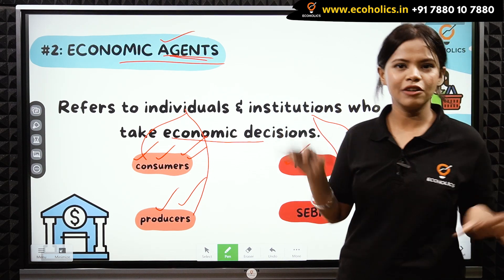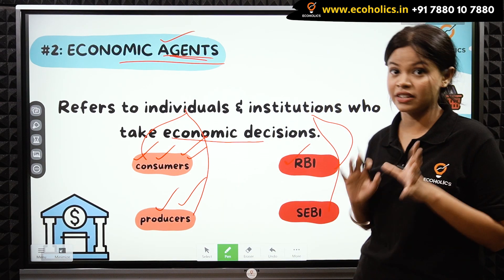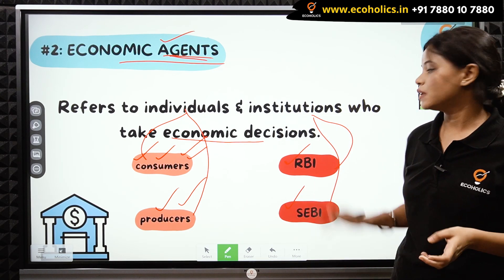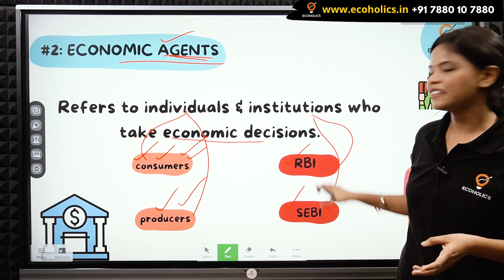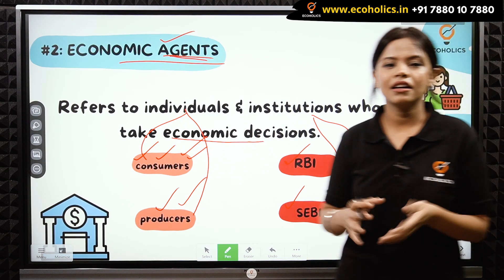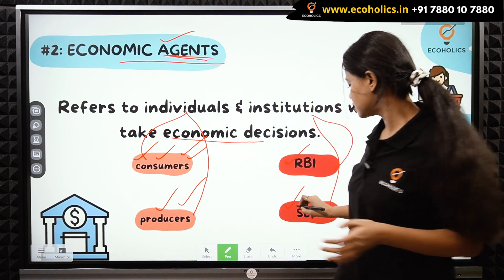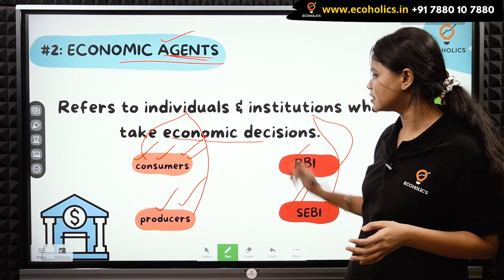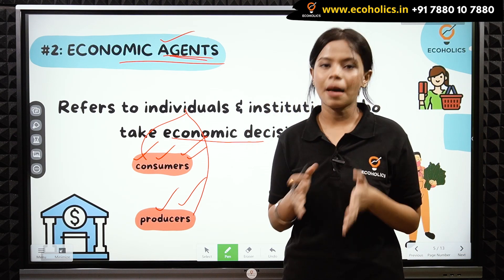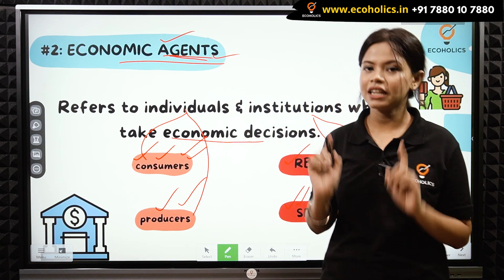RBI is the regulator of the money market, so RBI takes decisions in the money market. CB is the regulating body of the capital market, so CB regulates and takes economic decisions on the capital market. That was all about your economic agents.